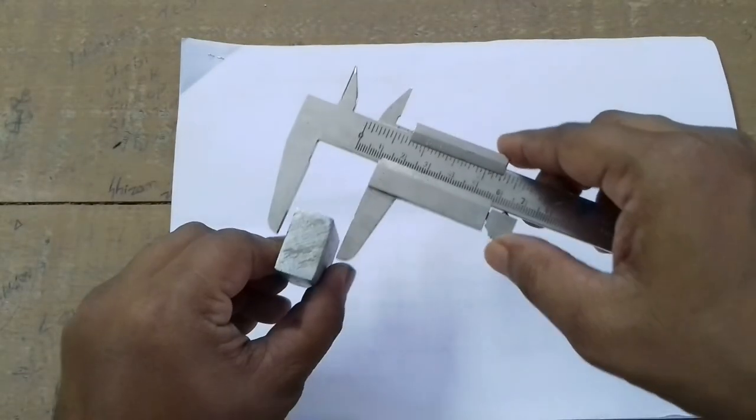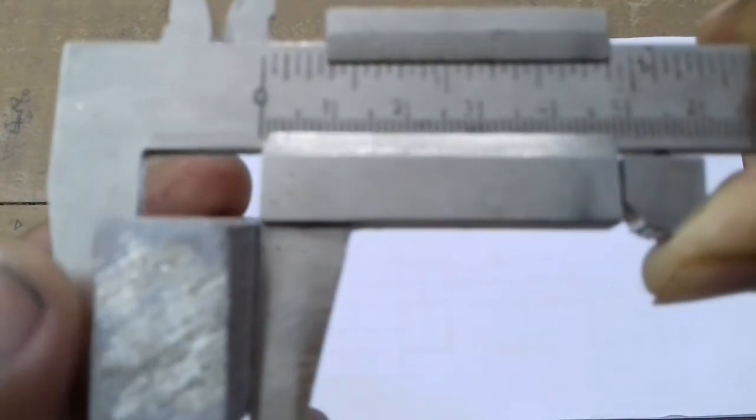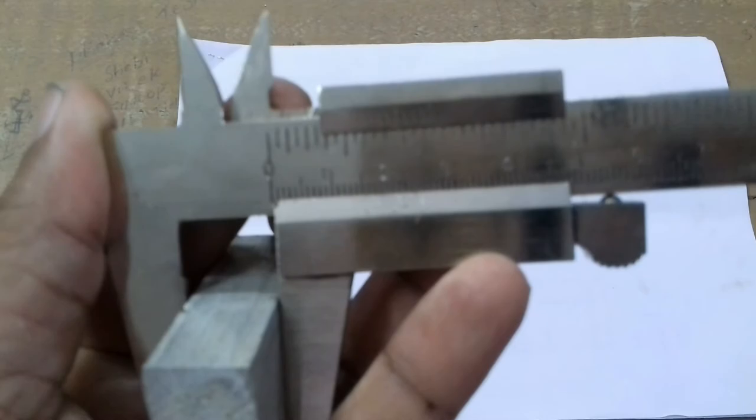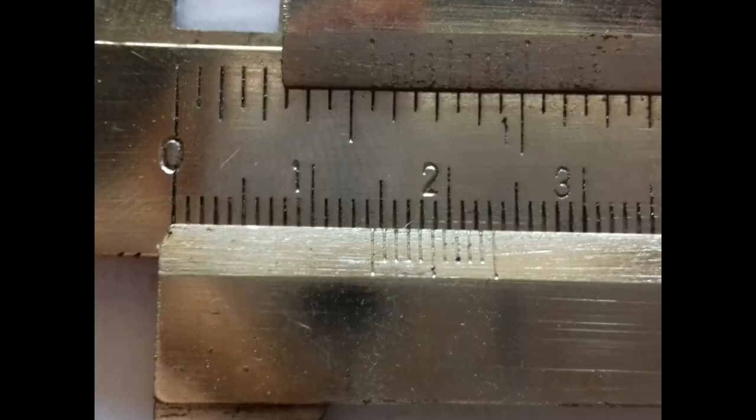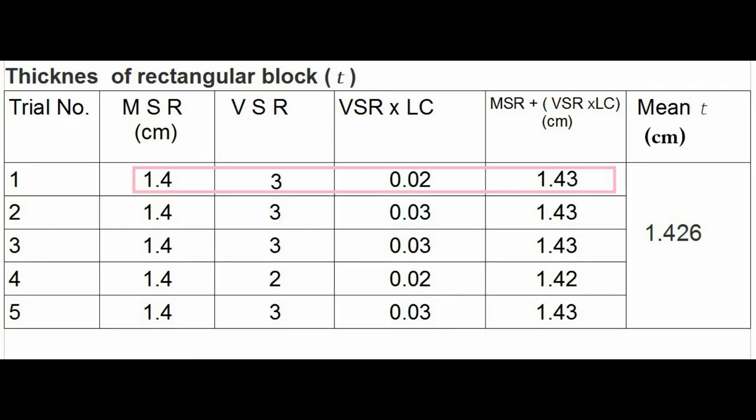Now, we go for finding thickness of the rectangular block. Fix the thickness part between the outer caliper jaws. Can you find MSR and VSR by yourself? MSR is 1.4 and VSR is 3. We repeat the experiment 4 more times and find the average thickness.